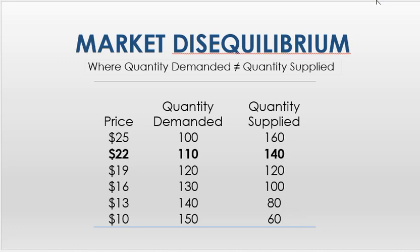We've talked about market equilibrium, which is where quantity demanded equals quantity supplied — where everybody that wants to buy at that price can buy at that price, and everyone that wants to sell at that price can sell at that price. But sometimes we're not going to be at equilibrium.